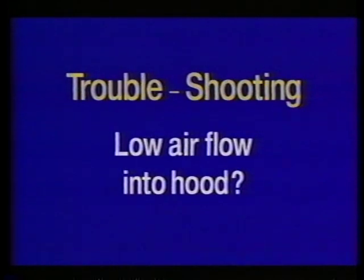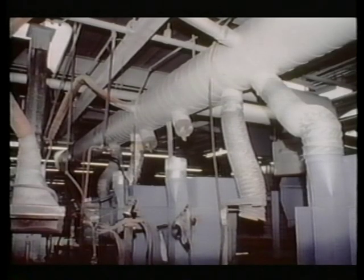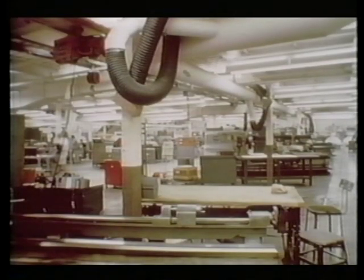Let's talk about troubleshooting existing systems. A major complaint is a lack of sufficient airflow into the hood. Look for plugged, dented, crimped, or damaged ducts; slipping fan belts; the fan turning in the wrong direction; worn-out fan blades; misadjusted gates and dampers; or a clogged air cleaner. When constant plugging of ducts is the problem, check the transport velocity — is it adequate to prevent settling? If employees complain about the hood or refuse to use it, check whether the hood interferes with work or simply doesn't provide good emission control.